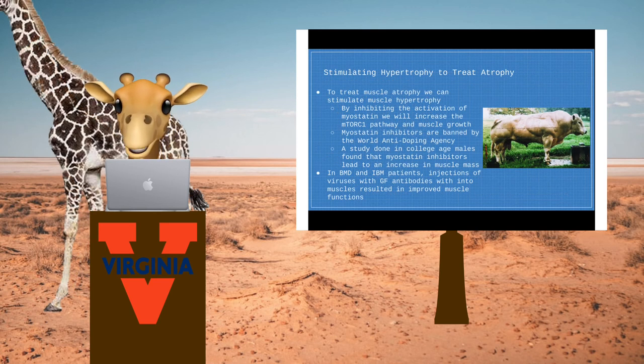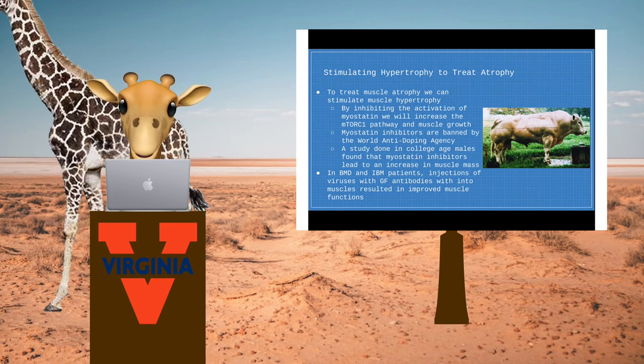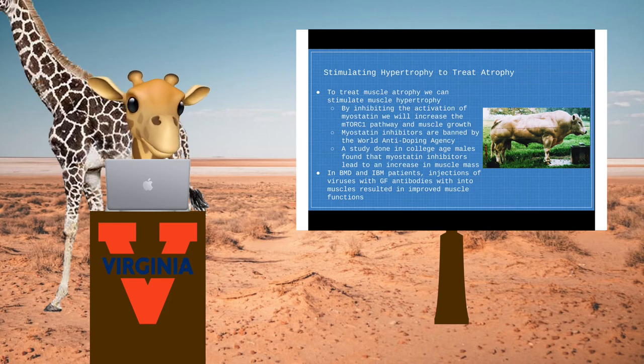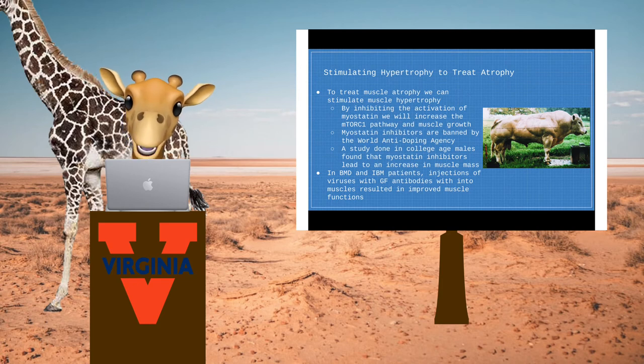Because muscle atrophy and hypertrophy are regulated by the same mechanisms, we can stimulate hypertrophy in order to treat atrophy. A study done in college-aged males showed that blocking myostatin binding resulted in an increase in muscle growth. And in fact, myostatin inhibitors are banned in competition.